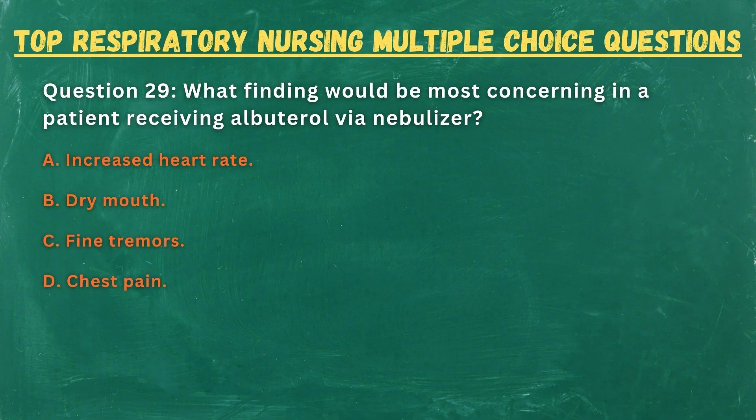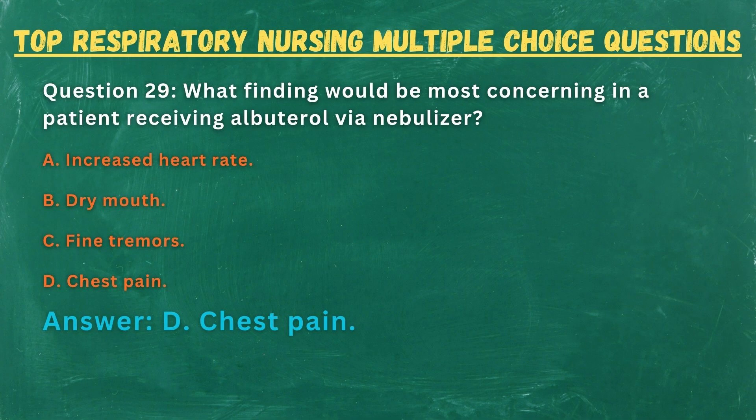Question 29. What finding would be most concerning in a patient receiving albuterol via nebulizer? A. Increased heart rate. B. Dry mouth. C. Fine tremors. D. Chest pain. Answer: D. Chest pain.